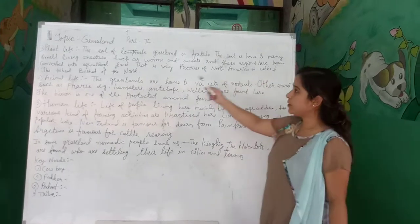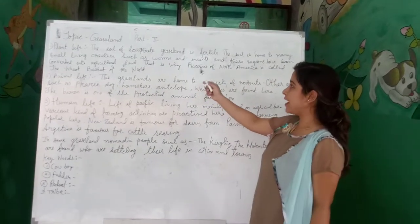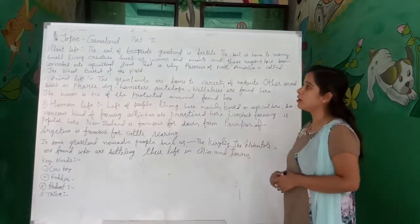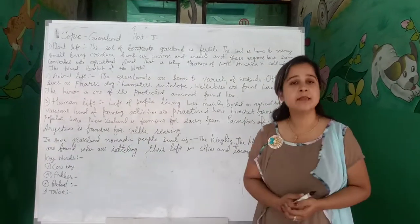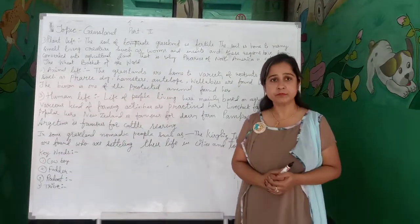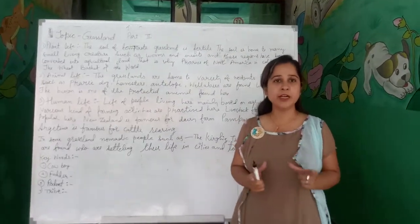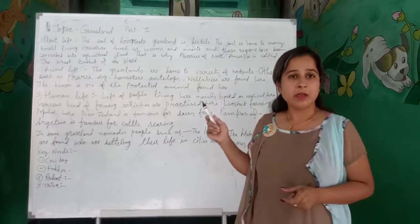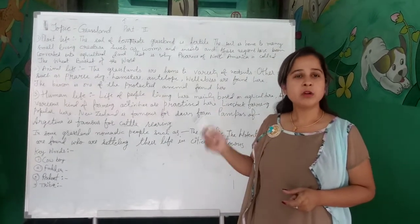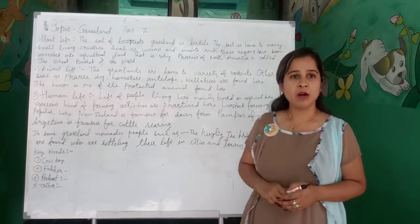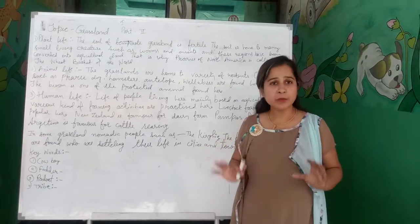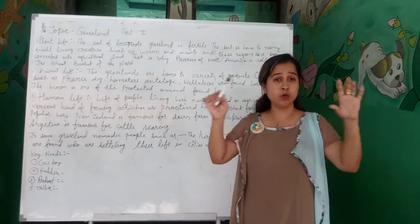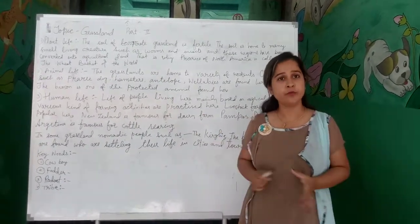These regions have been converted into agricultural land. That is why North America is called the wheat basket of the world. Due to the excellent fertility of the soil, this northern part of America — North America — is called the wheat basket of the world, because North America is that part of the world which is a huge producer of wheat.